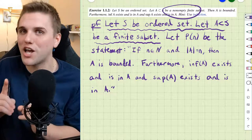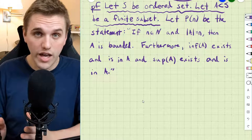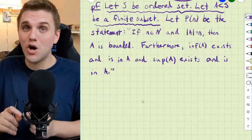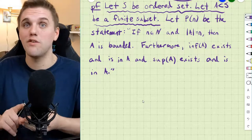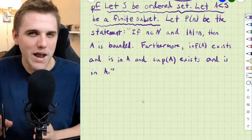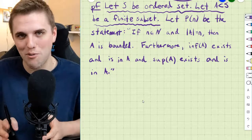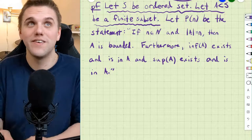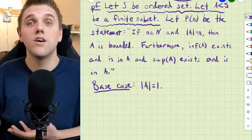So what's our base case? In this textbook the natural numbers are positive integers: 1, 2, 3, 4, and so on, not including 0. Regardless, you have to start with N equals 1 in this problem, so we get to assume the size of A is at least 1. Let's take a look at when the set A has a size of 1.